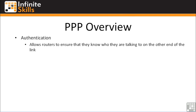Authentication allows routers to ensure that they know who they're talking to on the other end of the link. It is useful on dial-on-demand connections — for example, if you have an ISDN router that dials into a central hub, you want to make sure the router you think is dialing you is actually the one dialing you. To be honest, authentication is not used that much on a point-to-point link because you have control over what's plugged into each end, but we will show you the commands in the lab to set it up, just for completeness.